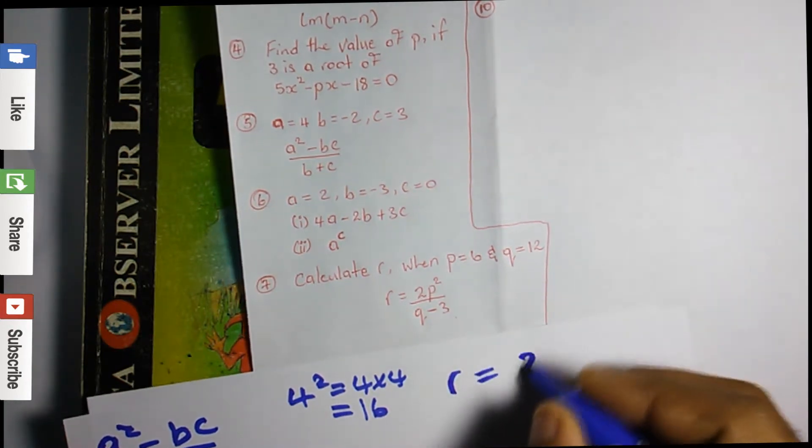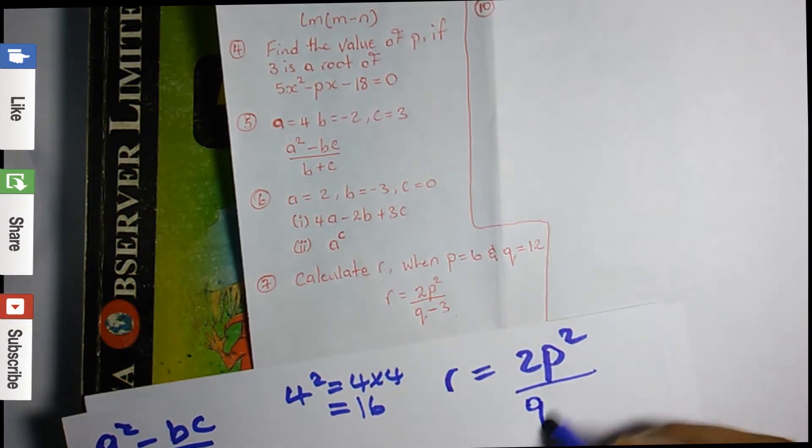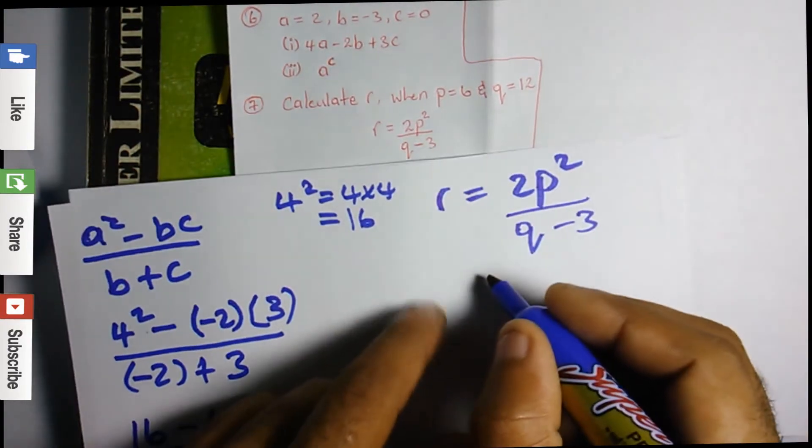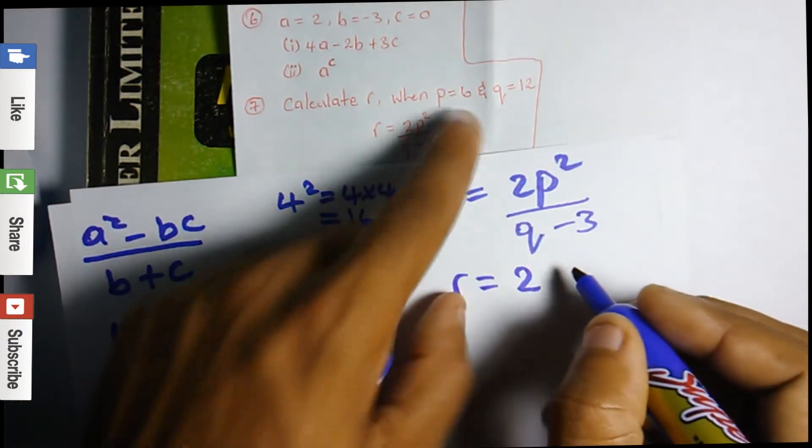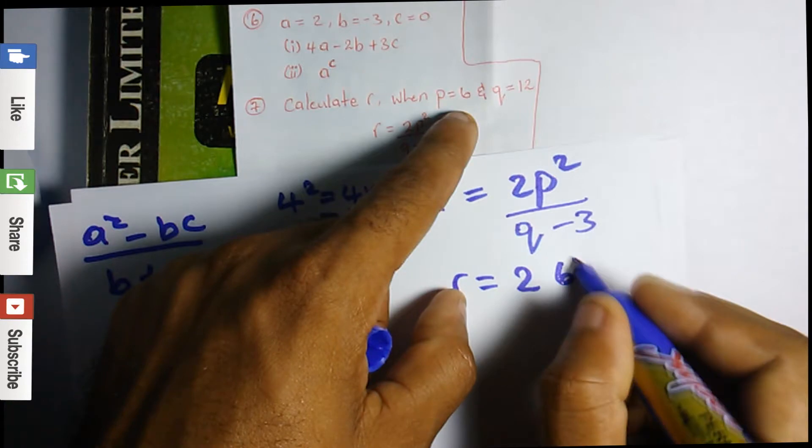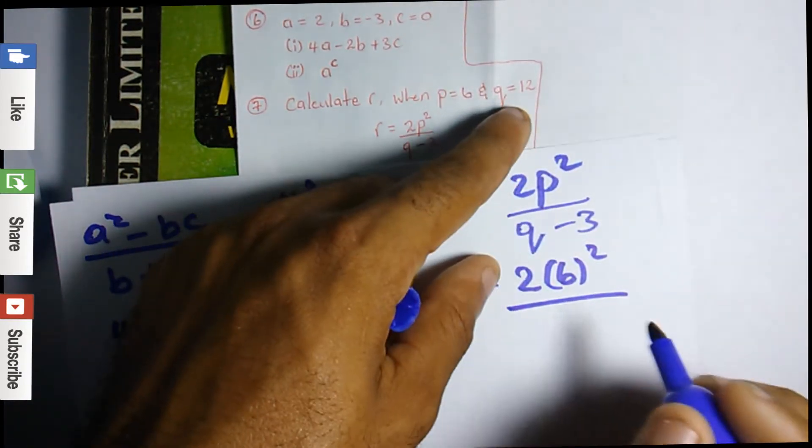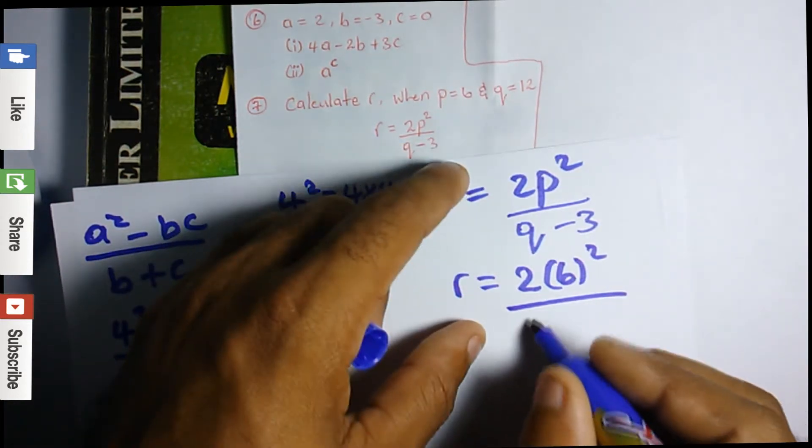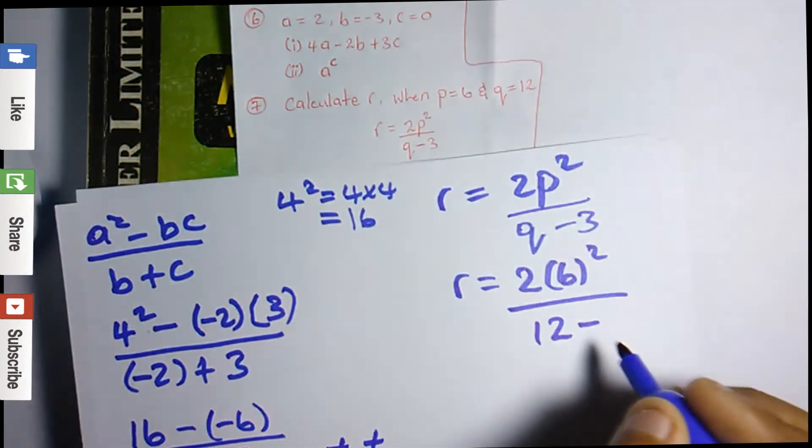r is equal to 2p² divided by q - 3. So r equals 2 times p², p is 6 squared, over q - 3, which is 12 - 3.